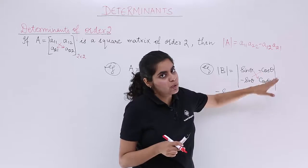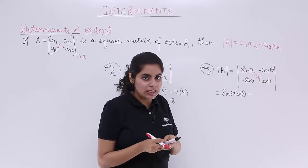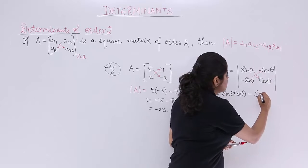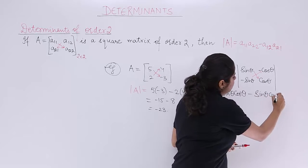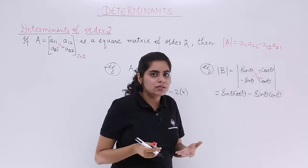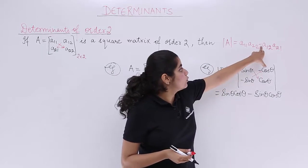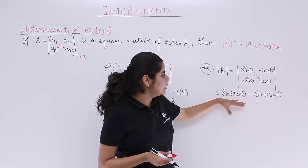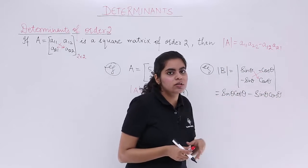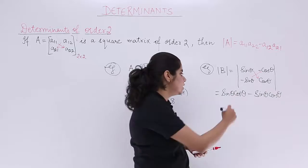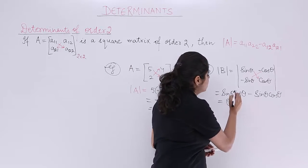Negative negative becomes positive. So it is plus sin theta cos theta, right? So it is plus sin theta cos theta. Writing plus does not make any difference. This minus was for what? This minus was for the formula. Now what is sin theta cos theta minus sin theta cos theta? Both things basically cancel each other. So the answer is a big 0.